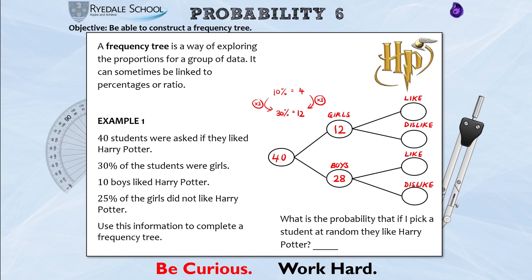10 boys liked Harry Potter. Since there are 28 boys in total, that means 18 boys did not like Harry Potter — these branches must add to make the total. 25% of the girls did not like Harry Potter: halve 12 to get 6, halve again to get 3 — so 3 girls did not like Harry Potter, meaning 9 girls did like Harry Potter. The probability of picking a student who likes Harry Potter is 9 plus 10 over 40, which is 19/40.